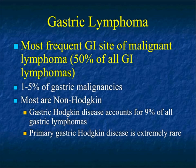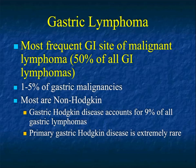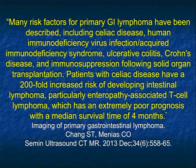Let's look at some of the tumor possibilities. Gastric lymphoma: the most frequent GI site of malignant lymphoma is indeed the stomach. It's still a small percent — under 5% of gastric malignancies. Most are non-Hodgkin's lymphoma. Primary gastric Hodgkin's disease is extremely rare.